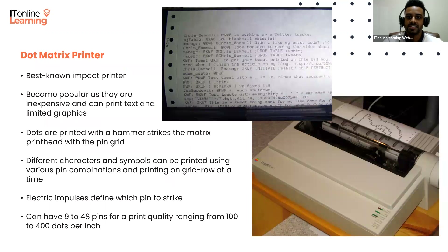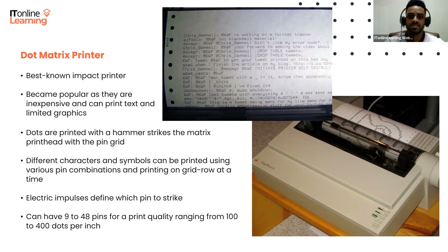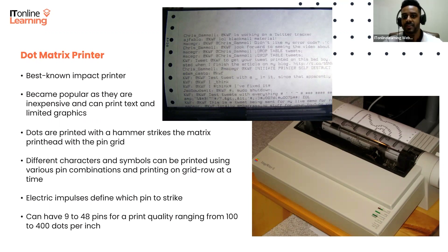The best-known impact printer is the dot matrix. We'll often simply say dot matrix when we're actually referring to impact printing. Dot matrix printers became popular because they're inexpensive and can print text and limited graphics.